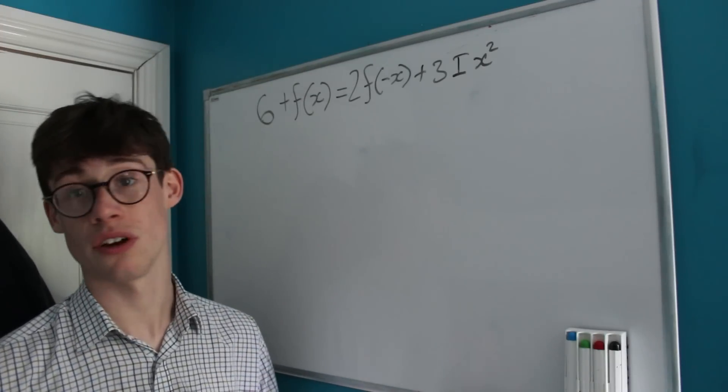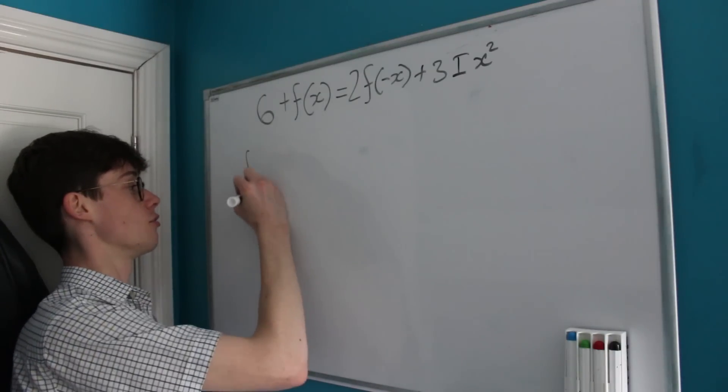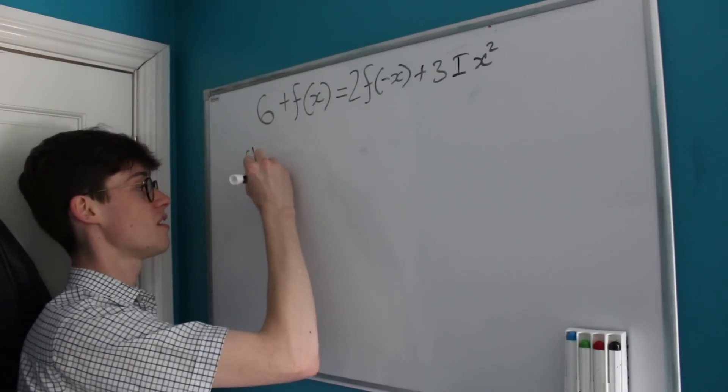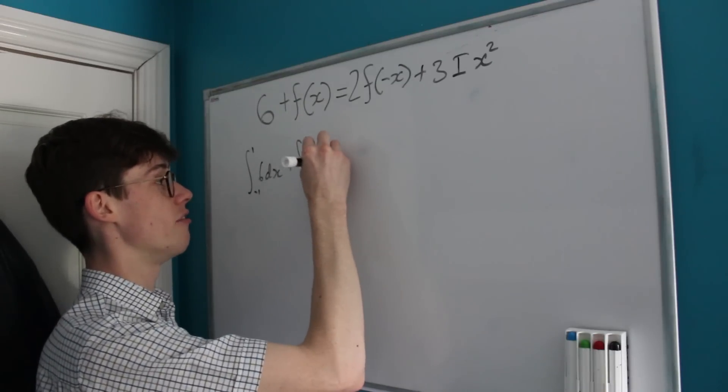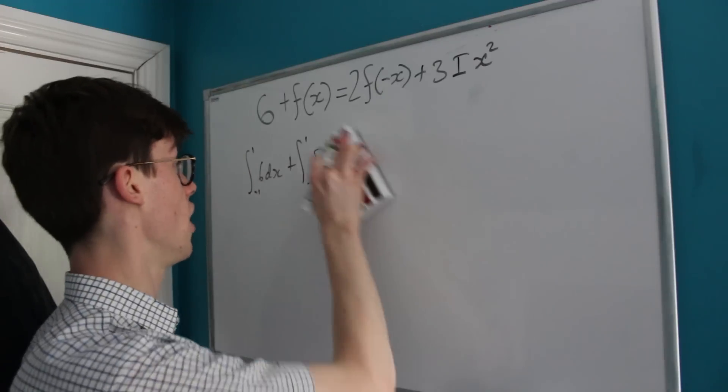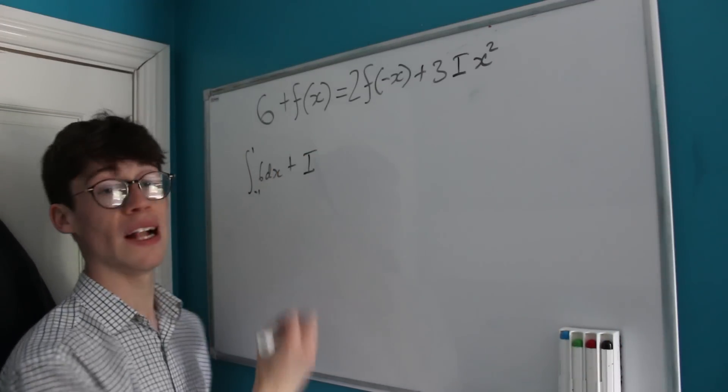Of course we can do that, as long as you do the same thing on either side of an equal sign it will always remain true. So we're going to be looking at the integral from -1 to 1 of 6, plus the integral from -1 to 1 of f(x)dx, which of course is just I because we've already called the value of whatever that is I.